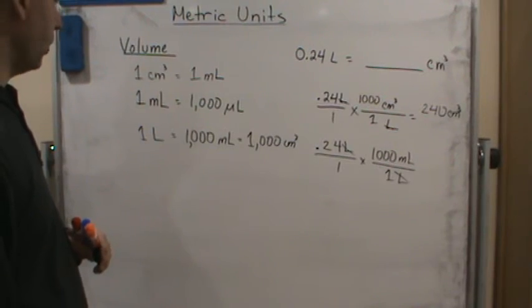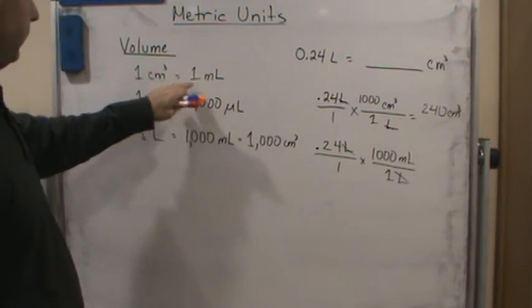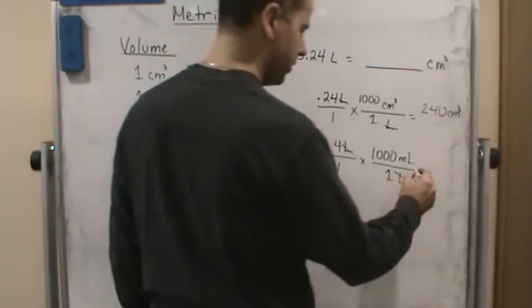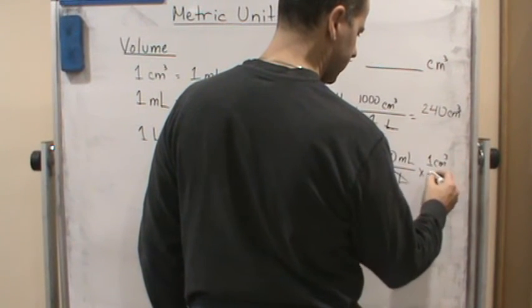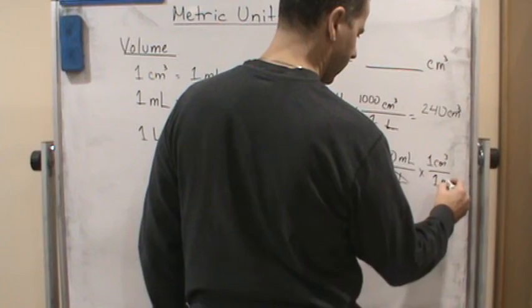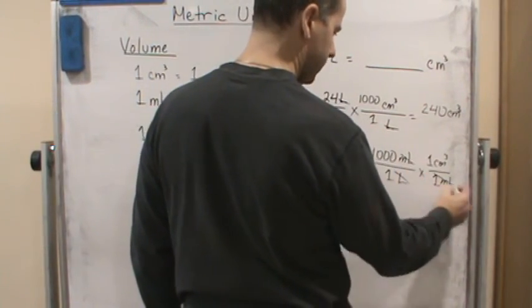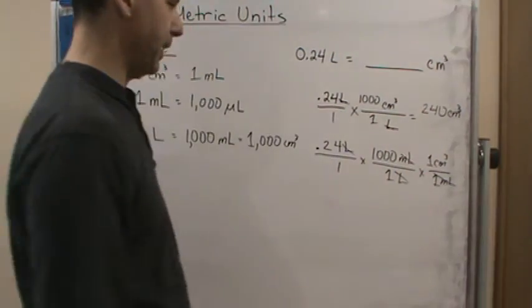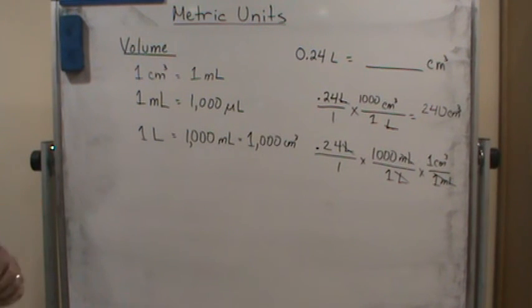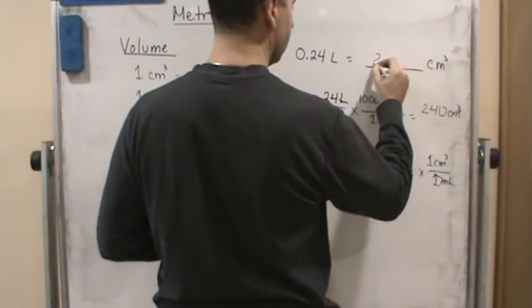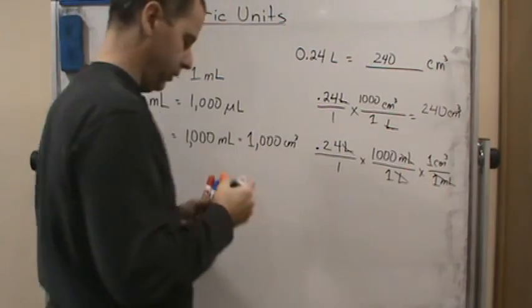And then we use, one milliliter is equal to one cubic centimeter. So we can use that. So one cubic centimeter is equal to one milliliter. And so the milliliters cancel. Well, guess what? We get the same answer. So it just depends on what you remember. You can get there. So the answer is 240 cubic centimeters.